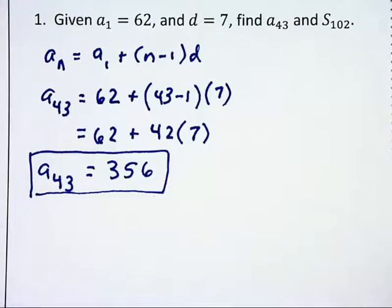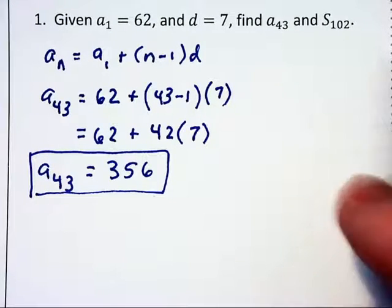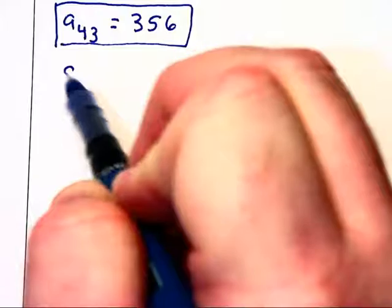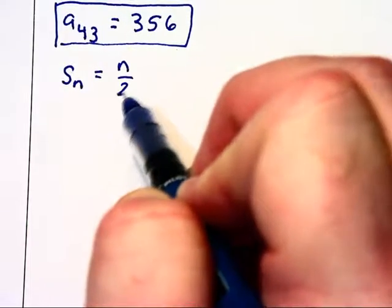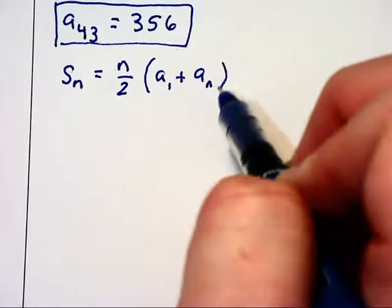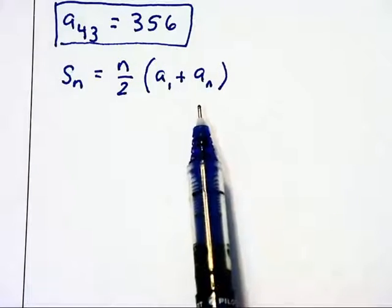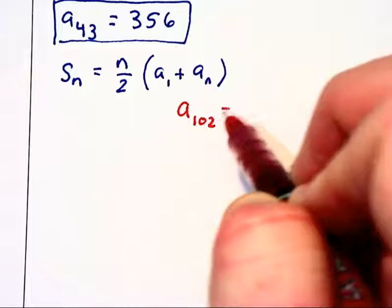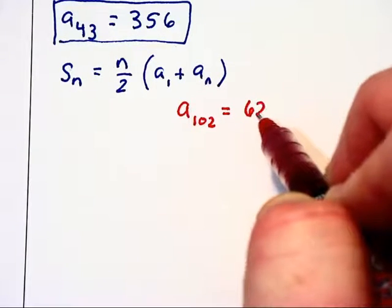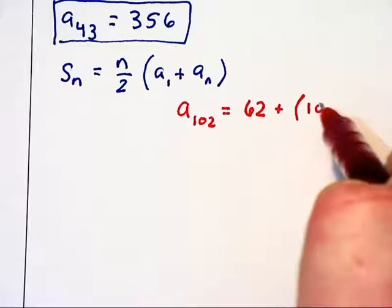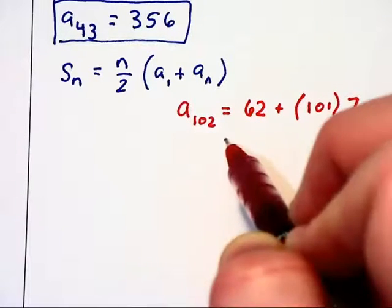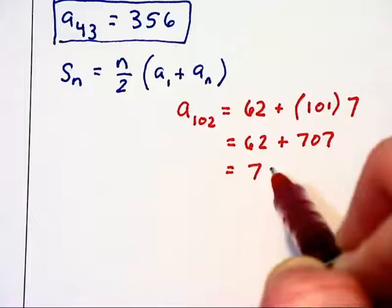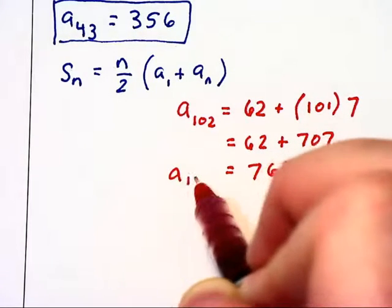Now we are being asked to find the sum of the first 102 terms. We need s sub n equals n over 2 times a1 plus a n. We have everything but the a sub n. We need to find the 102nd term: the starting term 62 plus 102 minus 1, that would become 101 times 7. That would be 62 plus 707 which is 769 for the 102nd term.